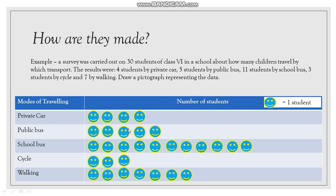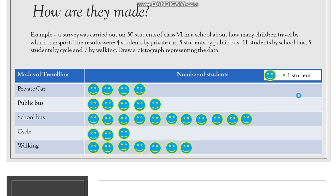So 1 smiley is 1 student. Only 1 student. If it would be 2, then 1 smiley is 2 students. So 1, 2, 3, 4. So 8 students travel by the private car. But the scale is only 1 student. So it would be 4 only.